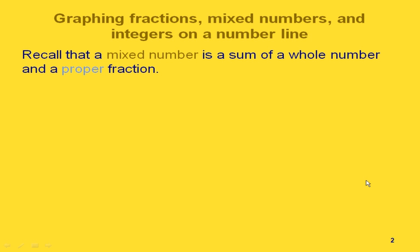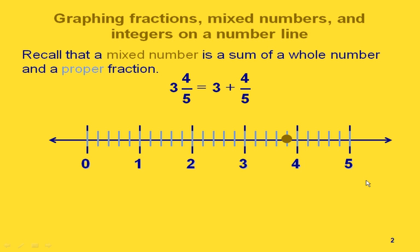To do that, remember that a mixed number is the sum of a whole number and a proper fraction. 3 and 4 fifths is the same as 3 plus 4 fifths. So if we want to graph this, we can think of the whole number part, the 3, and go to 3 on our number line, and then graph the 4 fifths, the fractional part. So if we're at 3, we just have to go over another 4 fifths. There's where the 3 and 4 fifths is.